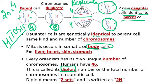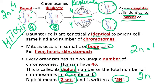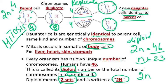Every organism has its own unique chromosome number. In humans it is 46 — the diploid number, written as 2n, found in somatic (body) cells. So 2n = 46, which is 23 pairs, and n = 23. The value n is called haploid, while 2n is called diploid.